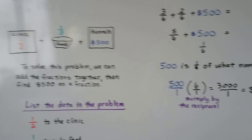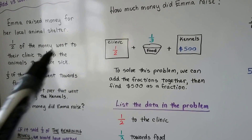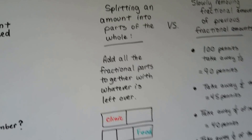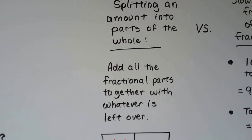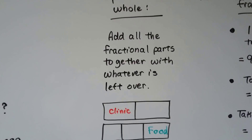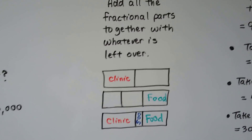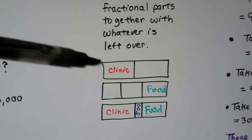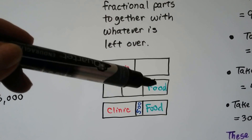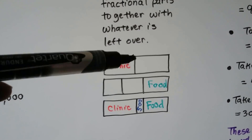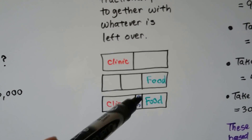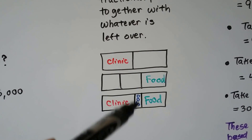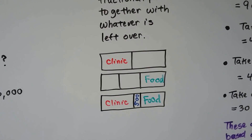And it was all because of the wording — half of the money, one-third of the money. We were splitting an amount into parts of the whole. We add all the fractional parts together with whatever is left over. So the clinic got half, a third went to food, and between the clinic and the food, this little piece was the $500 left over. It turns out it was one-sixth of the whole amount.